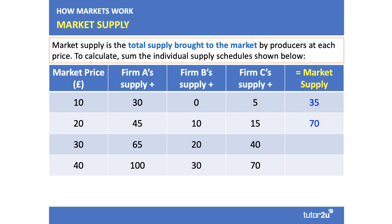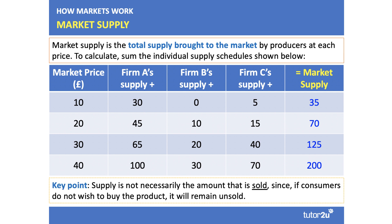As the price goes up from 30 to 40, supply expands because producers are willing and able to produce more. Supply is not necessarily the amount that's sold — supply is what producers are willing and able to bring to market. But if consumers don't wish to buy the product, it's going to remain unsold, and therefore we talk about the idea of stocks.